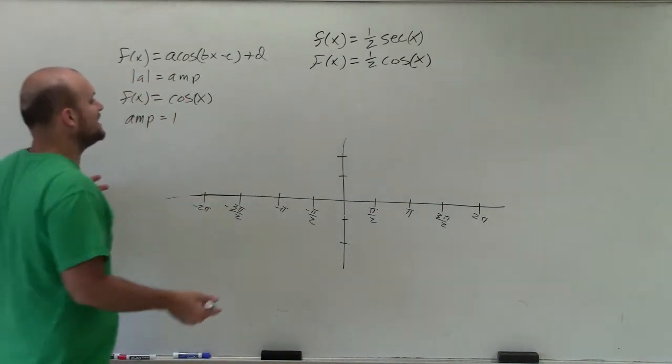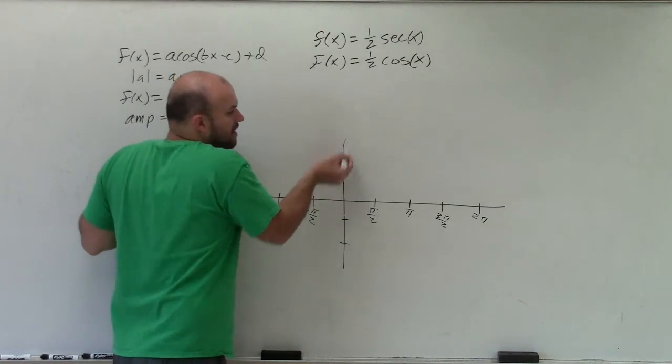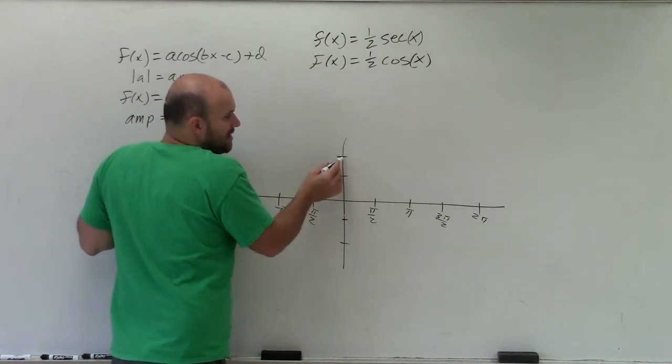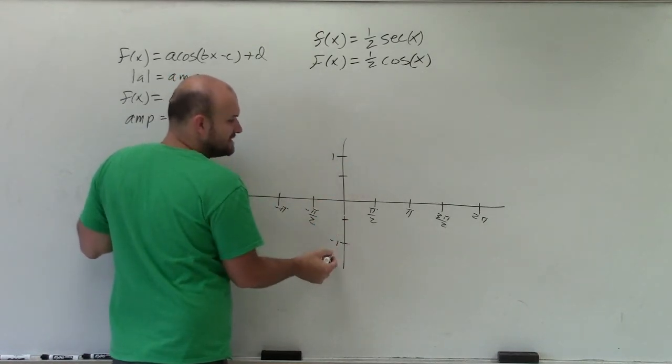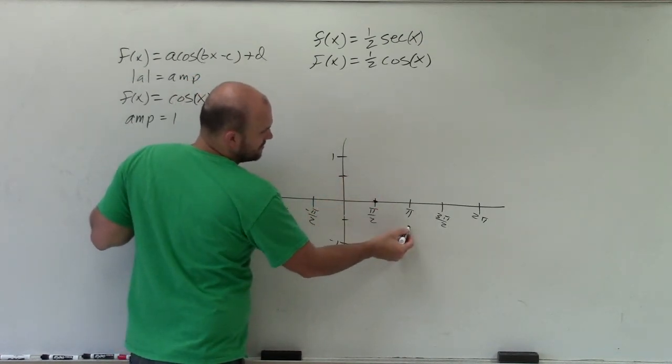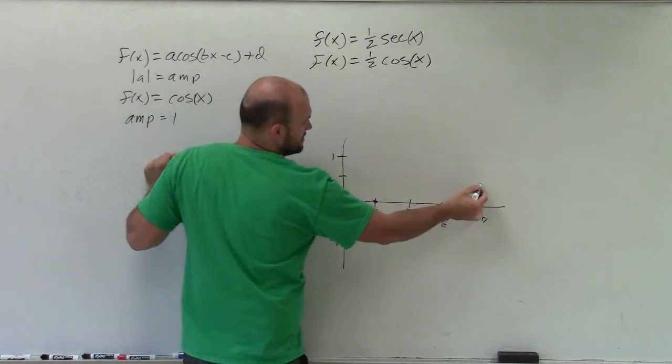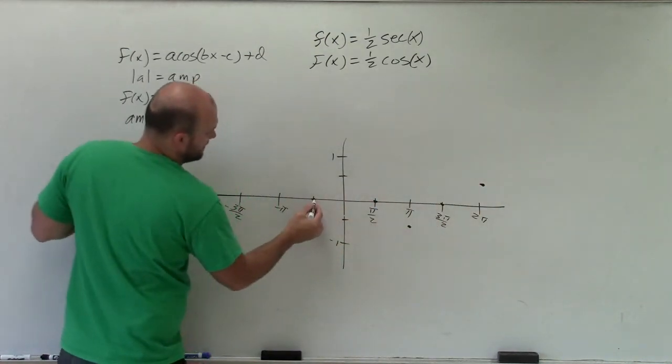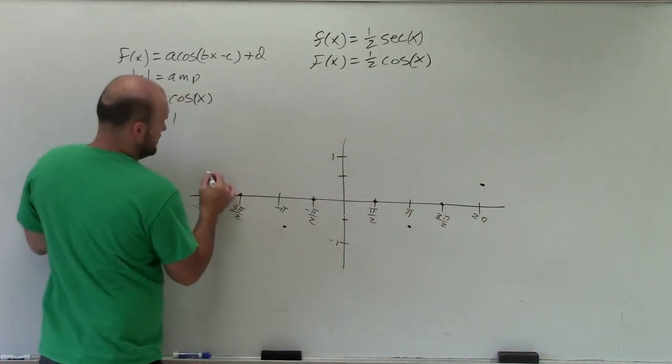If you remember, cosine always starts at the maximum of its initial period. But rather than starting up at 1 and going down to -1, we're only going to go up to 1/2, intercept, minimum, intercept, maximum. And we can follow that down process here.